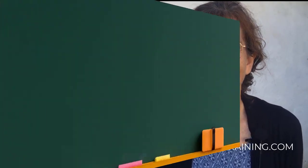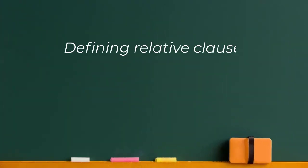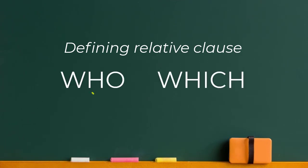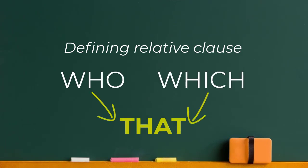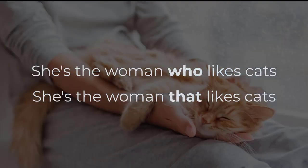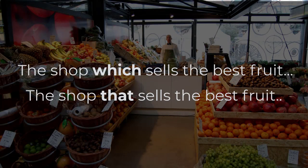Then we have the 'that' rule. In sentences where the information is essential, we can substitute 'that' for 'who' or 'which'. It's more informal and a lot more common in speech: 'She's the woman that likes cats', 'The shop that sells the best fruit is the one on the high street.'